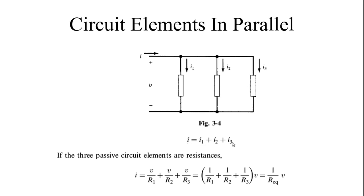So I is equal to I1 plus I2 plus I3. In a series connection the current passing through every element is the same, and the voltage across each element is different. Here the current is different and the voltage is the same. If you substitute the I values — V/R1 plus V/R2 plus V/R3 — V is common. Taking V common out, you get 1/R_equivalent.